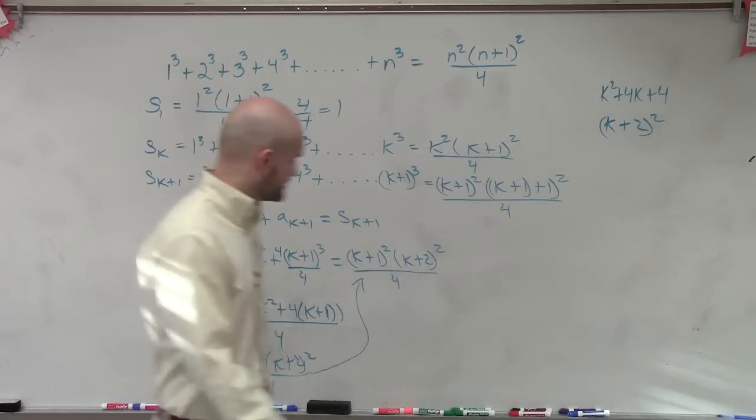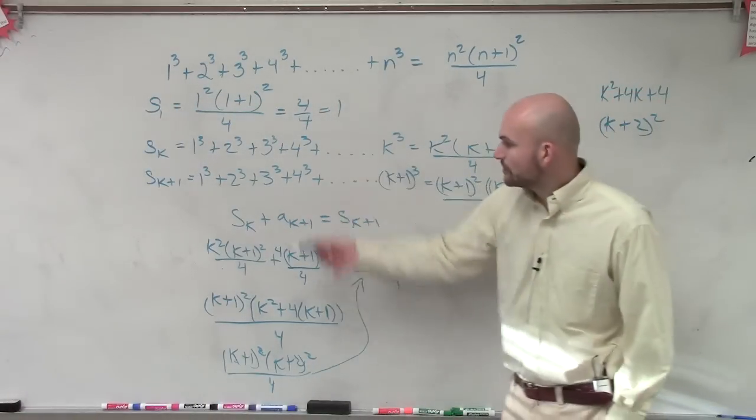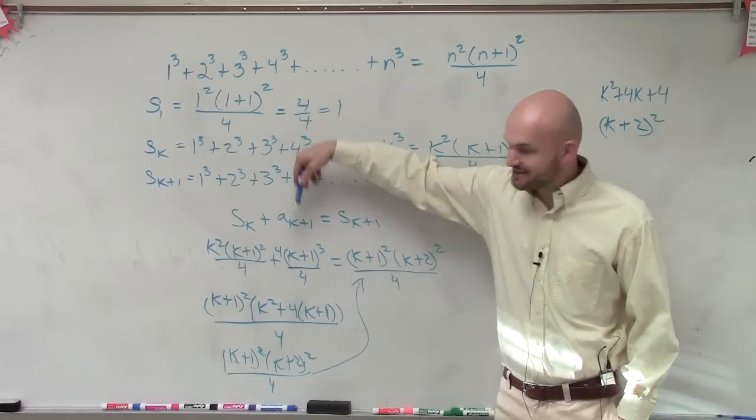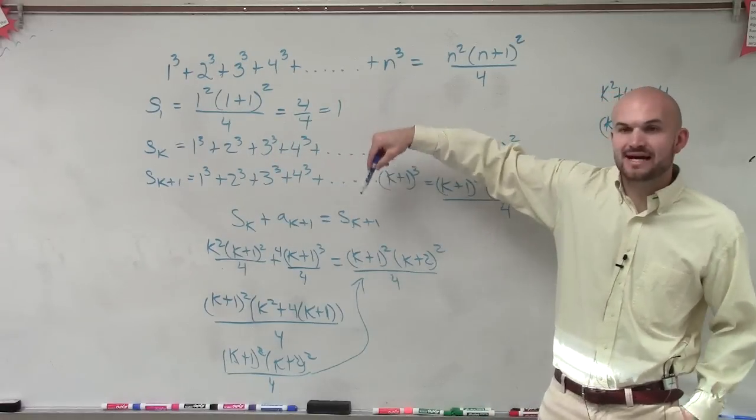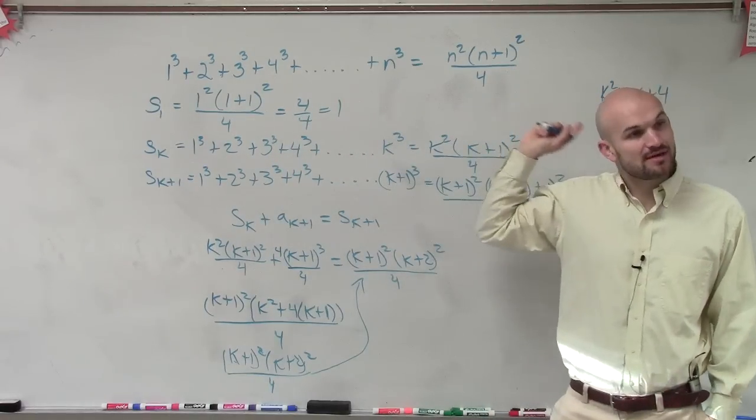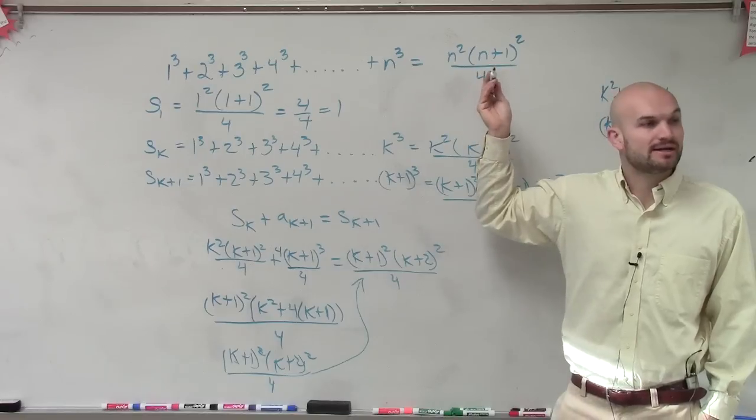I know my handwriting's a little sloppy. Sorry about that. But you guys can see, now that I've proved that, s(k) + a(k+1) equals s(k+1). So therefore, this sum formula works just that we've just proved by induction, okay?